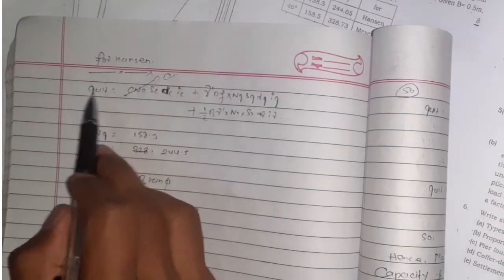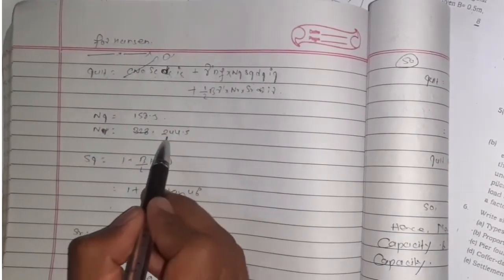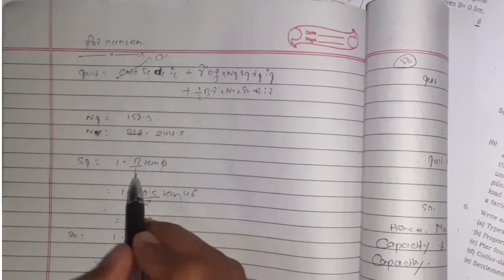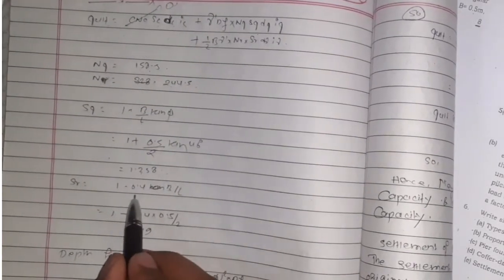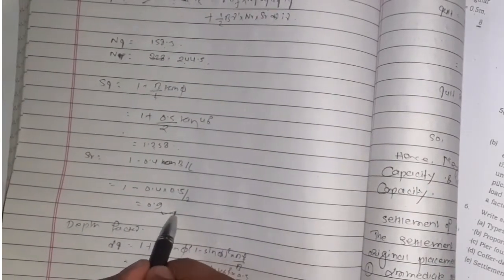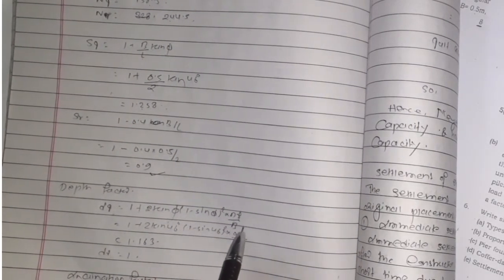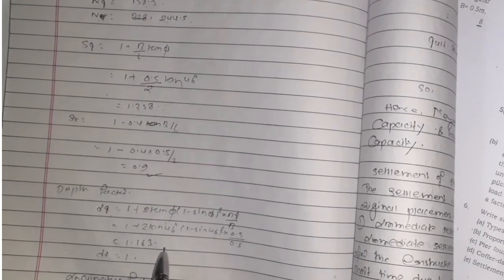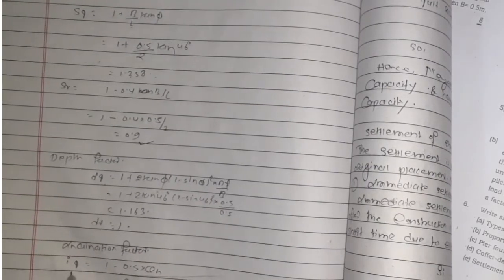Now using Terzaghi formula. Given Nq = 158.5, Nγ = 455. The formula is: sq = 1 + B/L·tanφ, B = 0.5, L = 2, so sq = 1.25. sγ = 1 - 0.4·B/L = 0.9. Depth factor dq = 1.163.